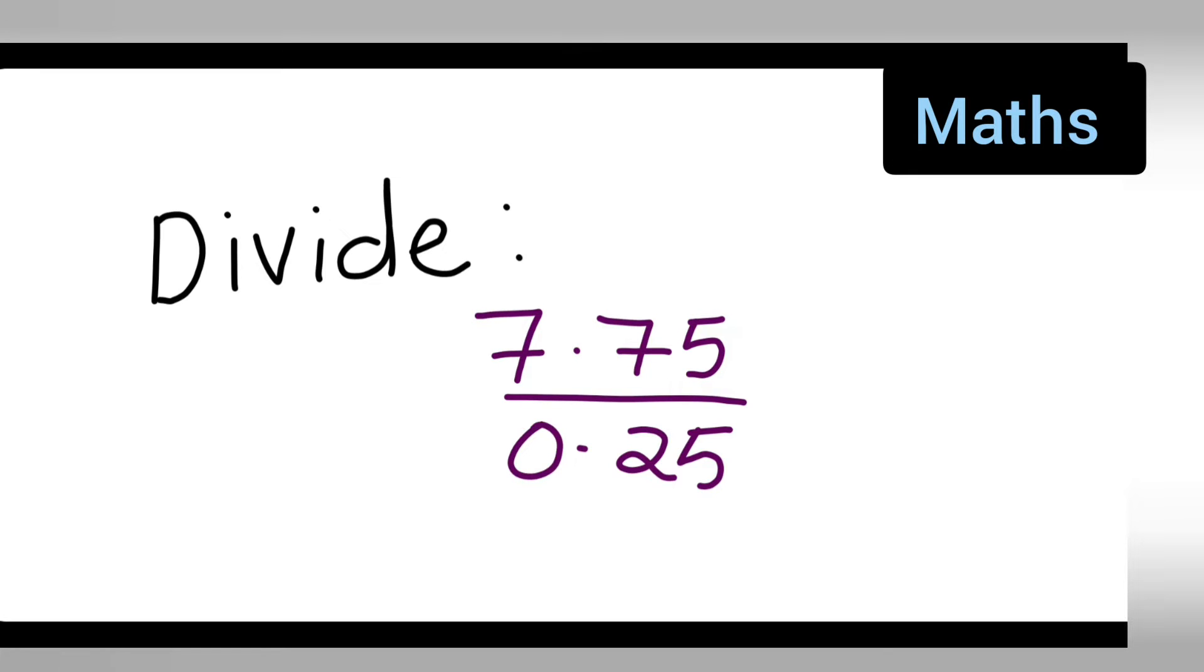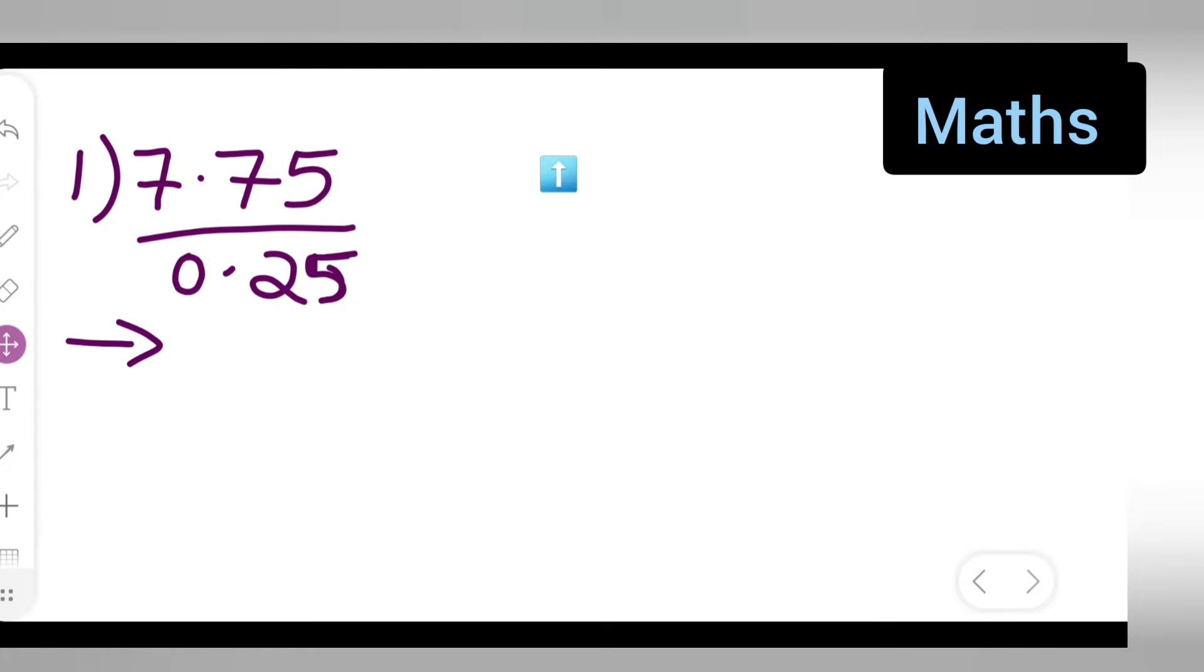So in today's class of mathematics, let us see how to divide these numbers: 7.75 upon 0.25. I can break down this 7.75 upon 0.25, so what I'll have to do is first write down 7.75.